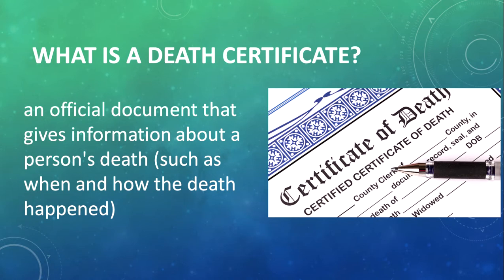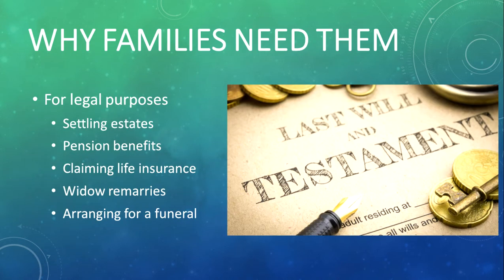What is a death certificate? It's an official document that gives information about a person's death, such as when and how they died. Why do we need them? They're used mainly for legal purposes. They allow the next of kin to settle the estates of the deceased, as well as collect on any pension benefits or life insurance.